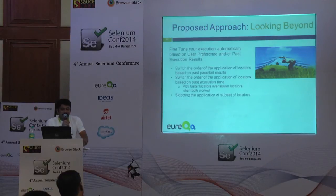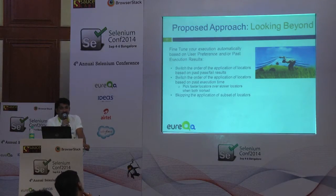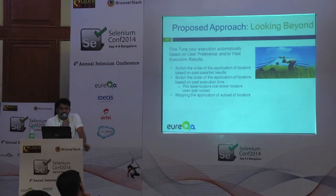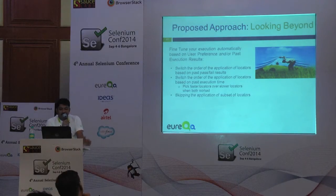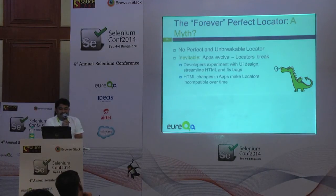Beyond this, you can fine-tune execution automatically based on user preferences and past execution results — switching the order of locator application based on past pass/fail results or past execution time, since not all locators take the same amount of time in all browsers. You can prioritize the faster locator when both are working. The forever-perfect locator still remains a myth — there is no perfect and unbreakable locator because apps evolve, browsers evolve, and locators break.